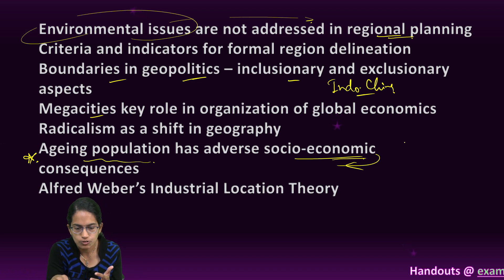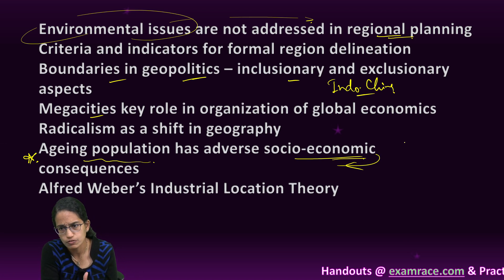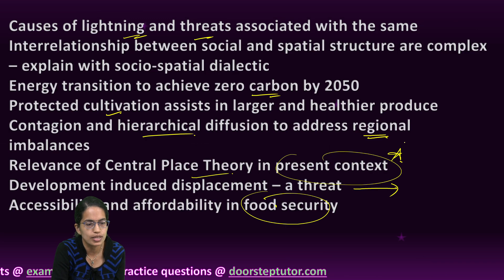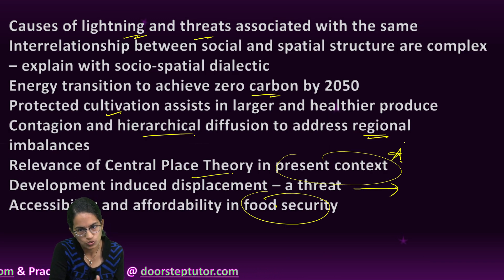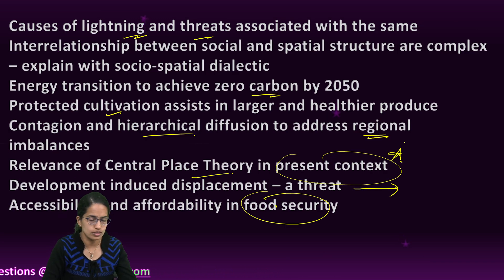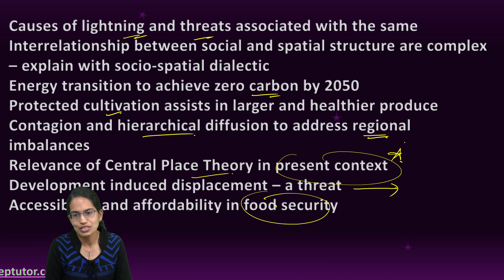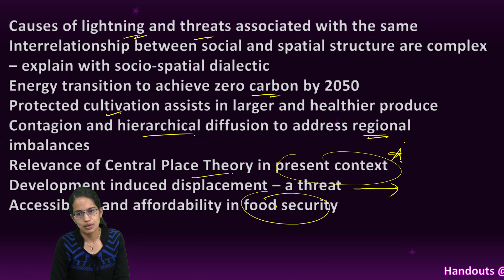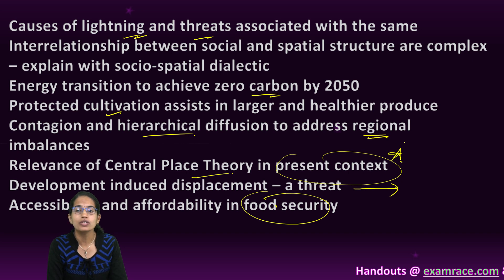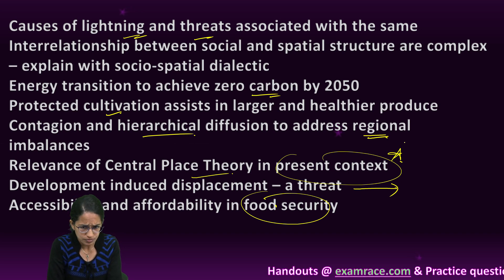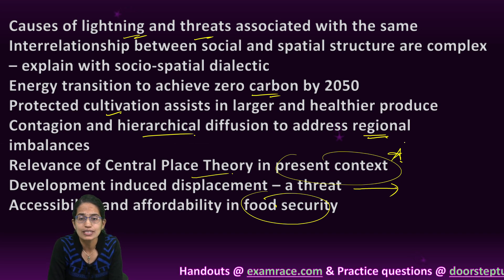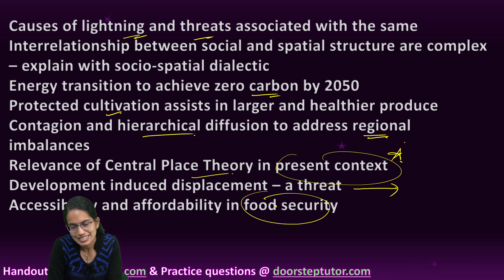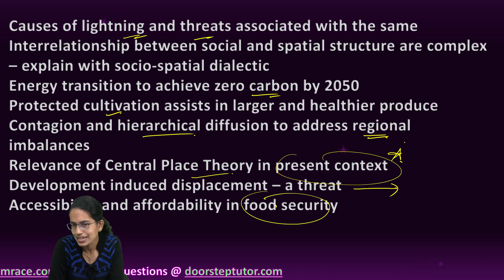Then Weber's industrial location theory — one of the theories again. Two theories were asked: one was Weber and the other was central place theory. Both are important and asked often. That was the paper for Paper 1. We would also discuss Paper 2. The links for the material and the relevant topics are available below. We would be discussing this paper in detail in the upcoming lectures. Stay tuned. Good luck.